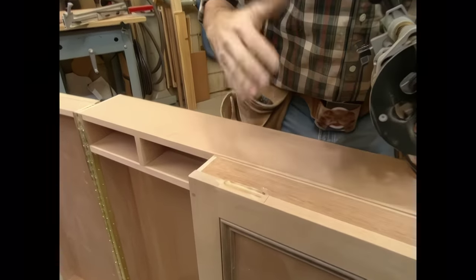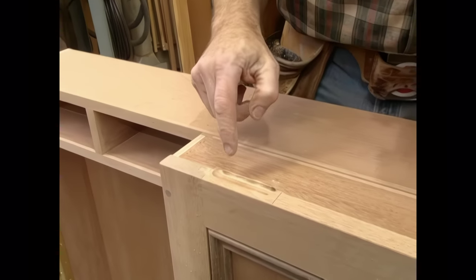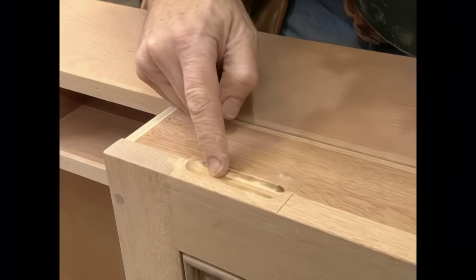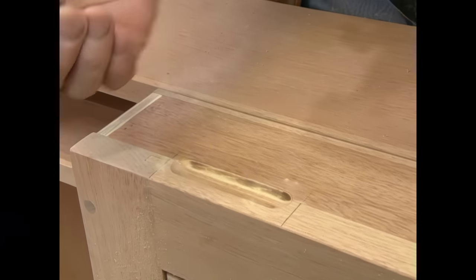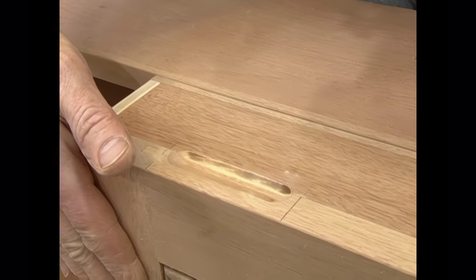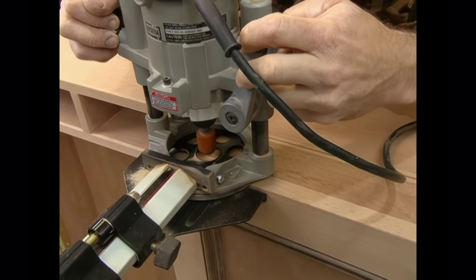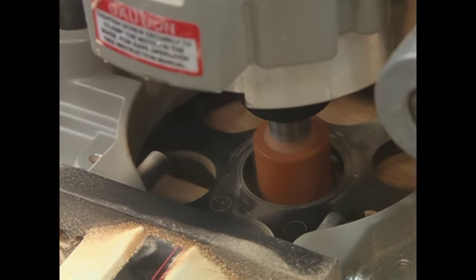Here I've flipped the cabinet upside down and I'm making a recess here. There'll be a pull in order to open the door. I didn't want any hardware on the face. I'm simply using a guide fence, and a one inch round nose bit.